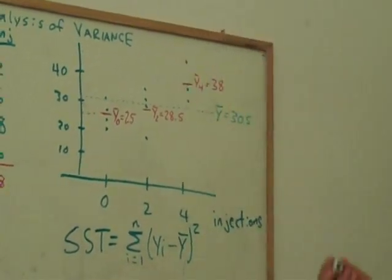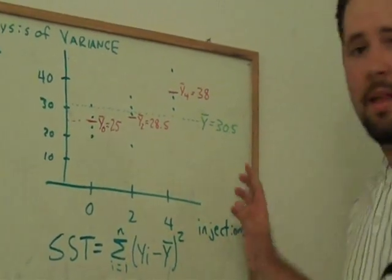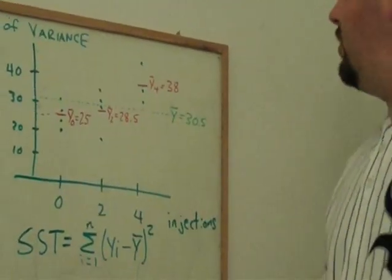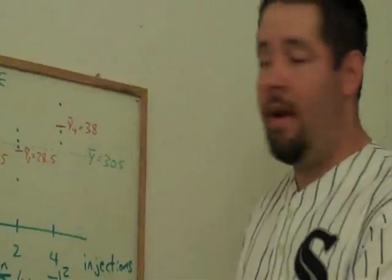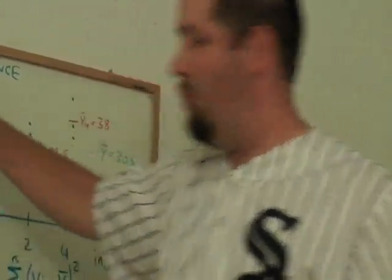Square those differences from the means and add them all up for all the observations. We could go ahead and do that. Just go 19 minus 30.5, square it, so on and so forth, 12 times.